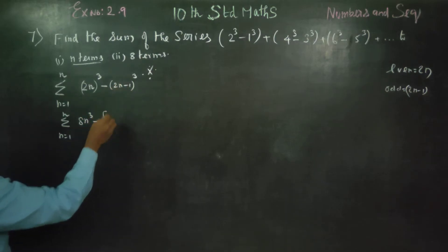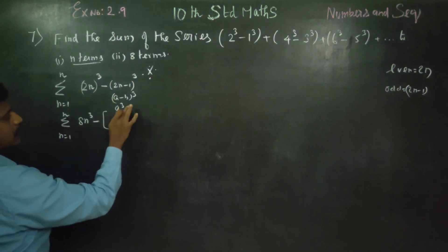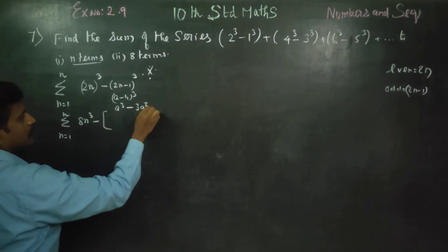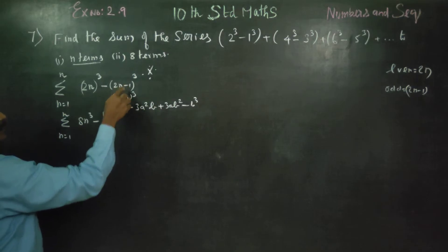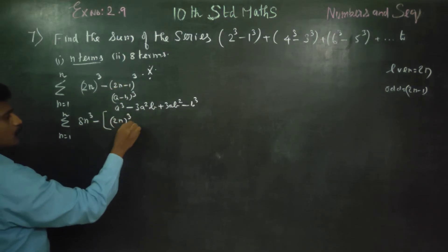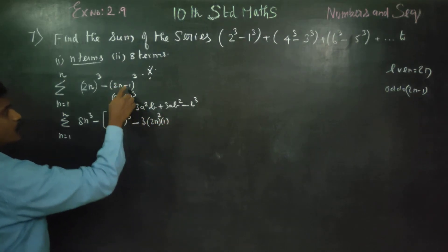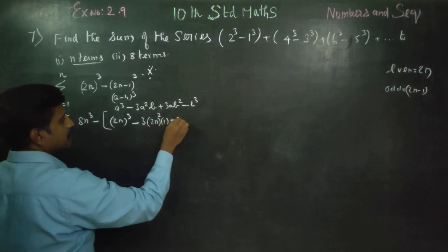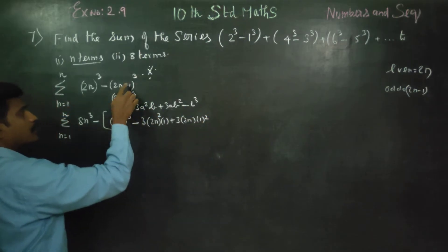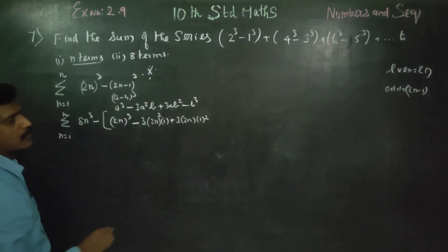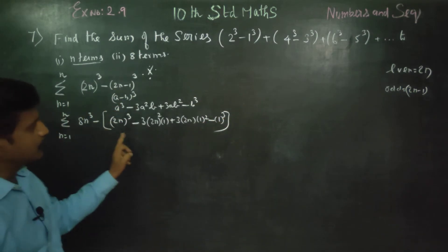What is a minus b cube? The a minus b cube formula is: a cube minus 3a squared b plus 3ab squared minus b cube. Here a is 2n and b is 1. So: (2n) cube minus 3 times (2n) squared times 1 plus 3 times 2n times 1 squared minus 1 cube. This is the a minus b cube expansion.